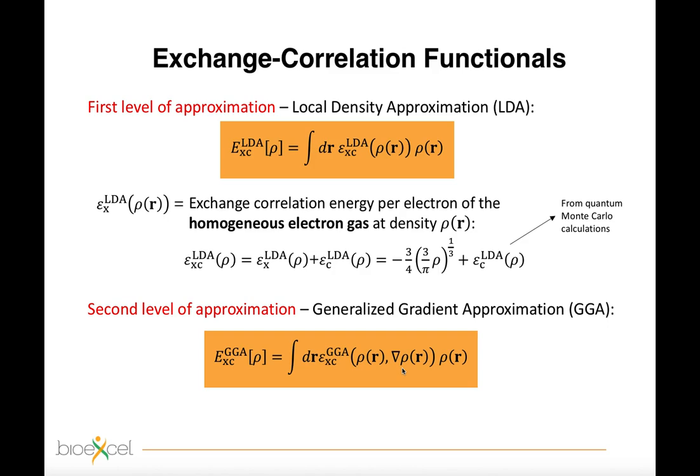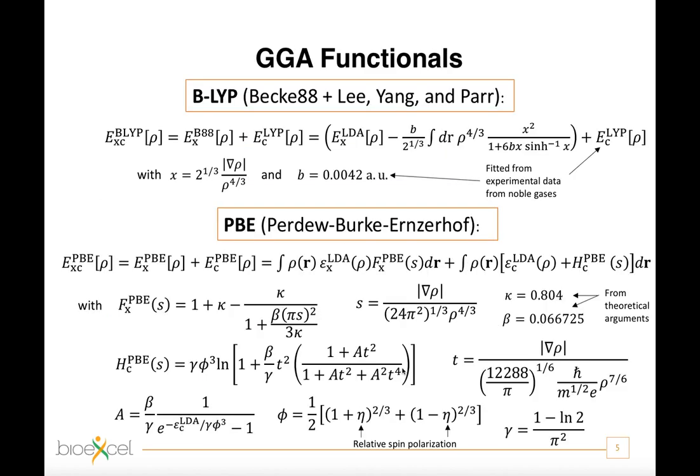Of course, there is no unique form for the GGA, and indeed many variants have been proposed in the years. Most of them are available in CP2K. An example is the very popular Becke and Lee-Yang-Parr approximation, in short B-LYP, or the Perdew-Burke-Ernzerhof approximation, in short PBE, that you use in the practicals and whose analytic expressions I have sketched in this scary slide for your reference.